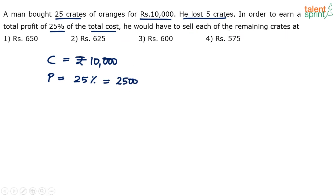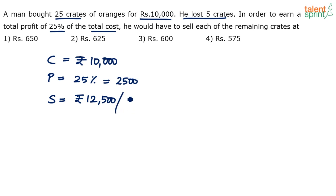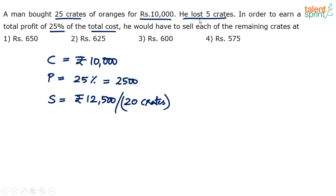He would have to sell each of the remaining crates. The total selling price is cost price plus profit — 10,000 plus 2,500 — which is 12,500. That is 12,500 for 20 crates, because five crates are lost: 25 minus 5 equals 20.